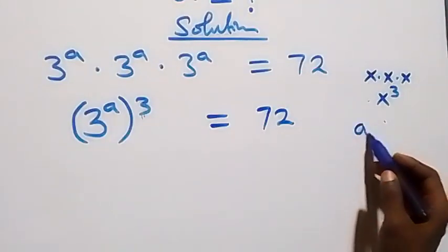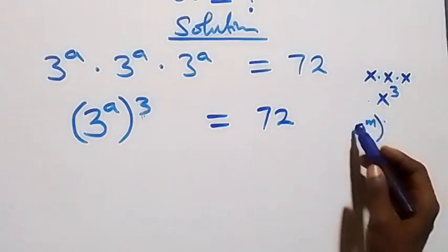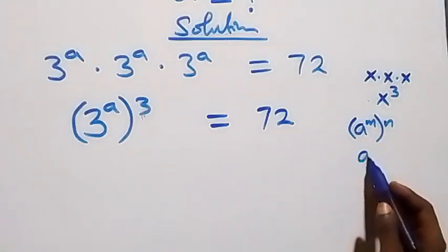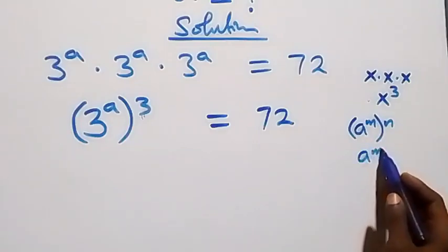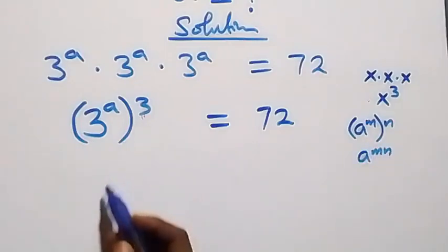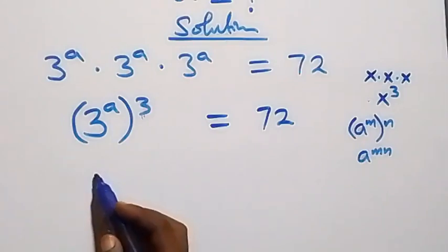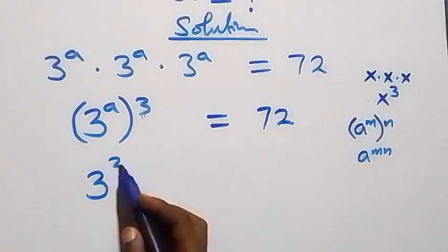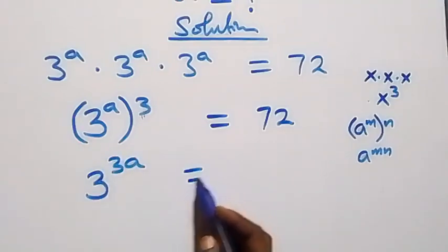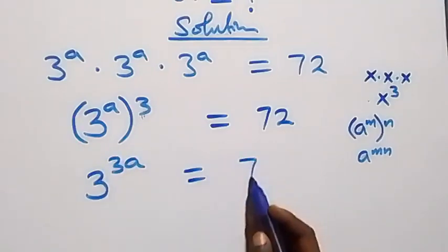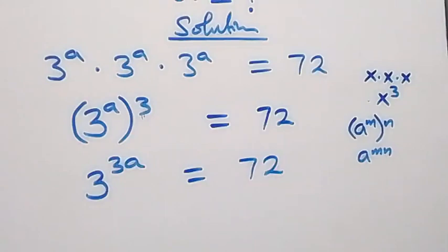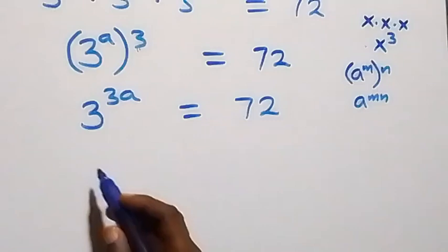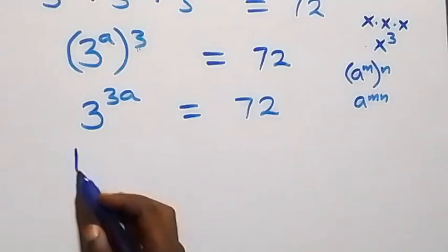Then applying the law of indices — when we have a raised to power m, raised to power n, this is the same as a raised to power m·n — the powers multiply, and we have three raised to power three times a, that is 3a, then equals 72 on this side.